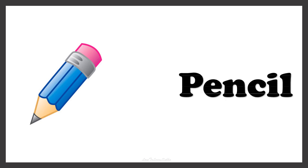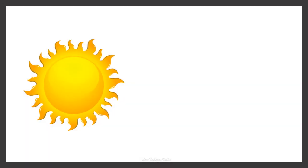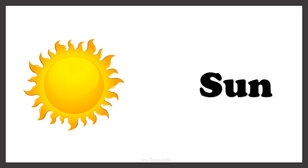Now can you guess the name of this picture? Yes, this one is PENCIL. So what article must we add in front of pencil? Let's check out the first letter of the word. The word PENCIL starts with the letter P, which is a consonant, so we use A. We call it A PENCIL. Now this one is SUN. SUN starts with the letter S, which is a consonant, so we use the article A. This is A SUN.